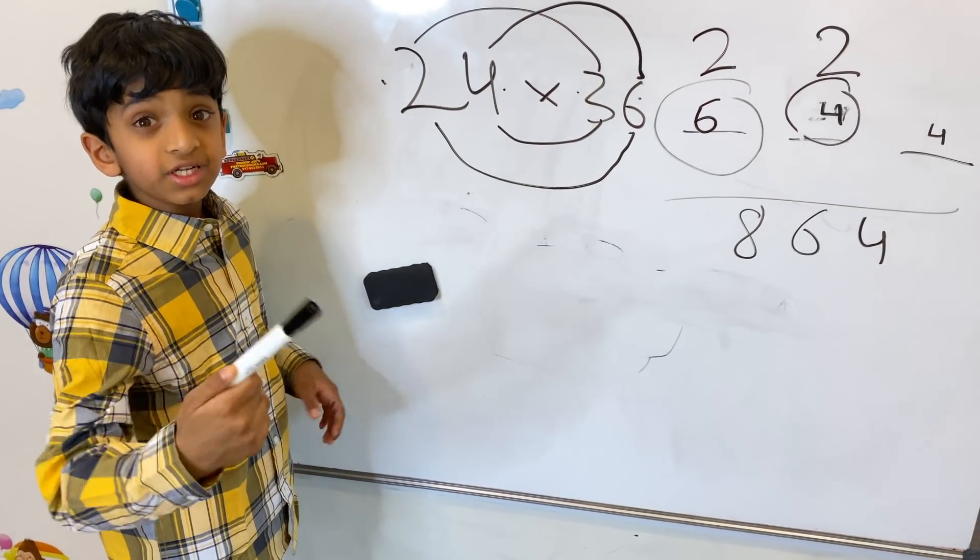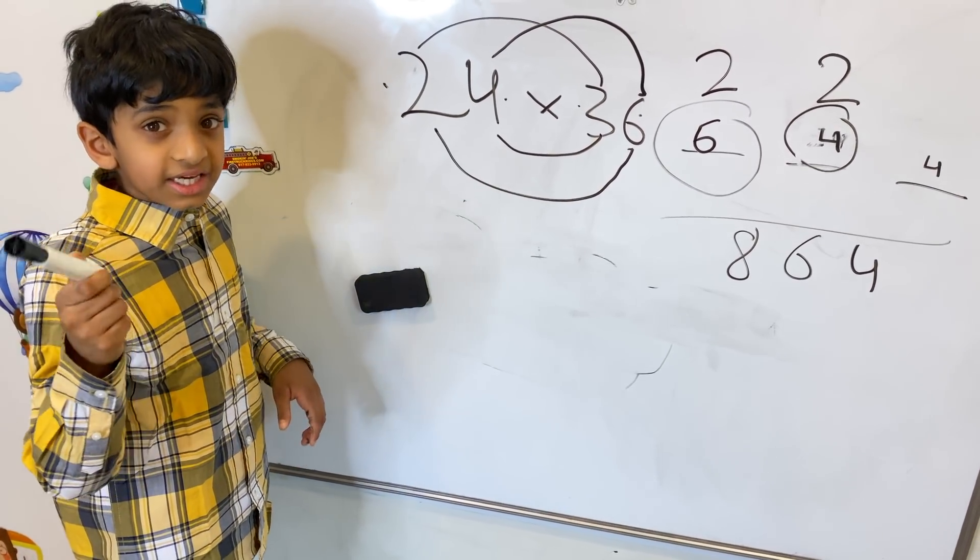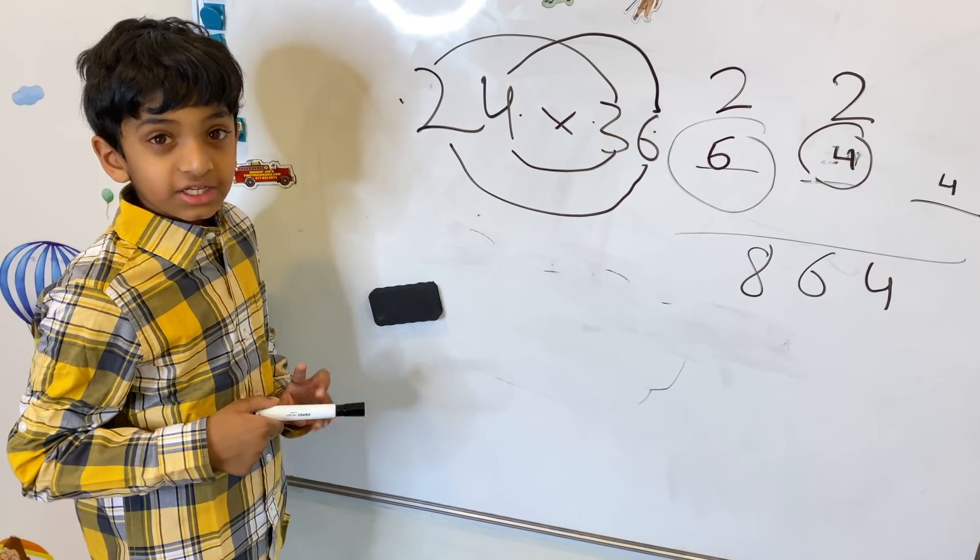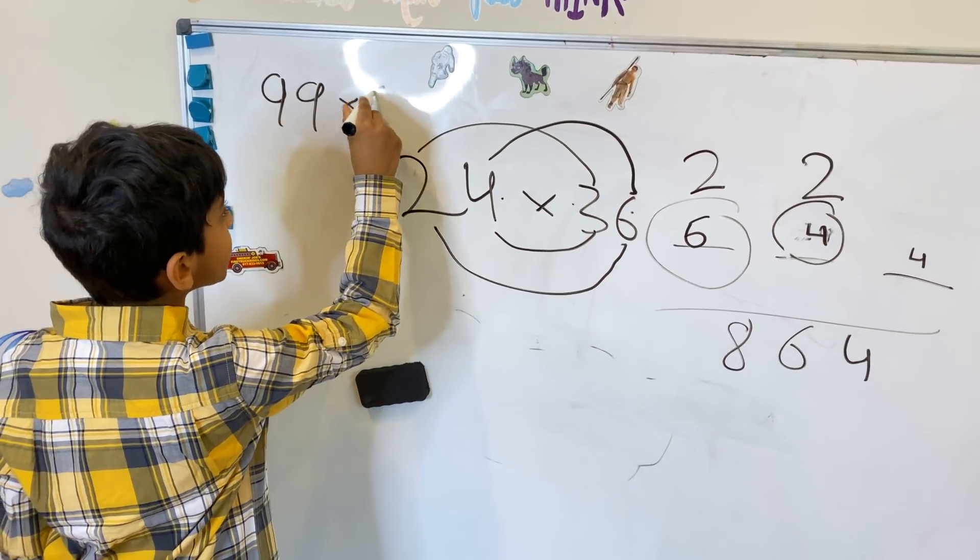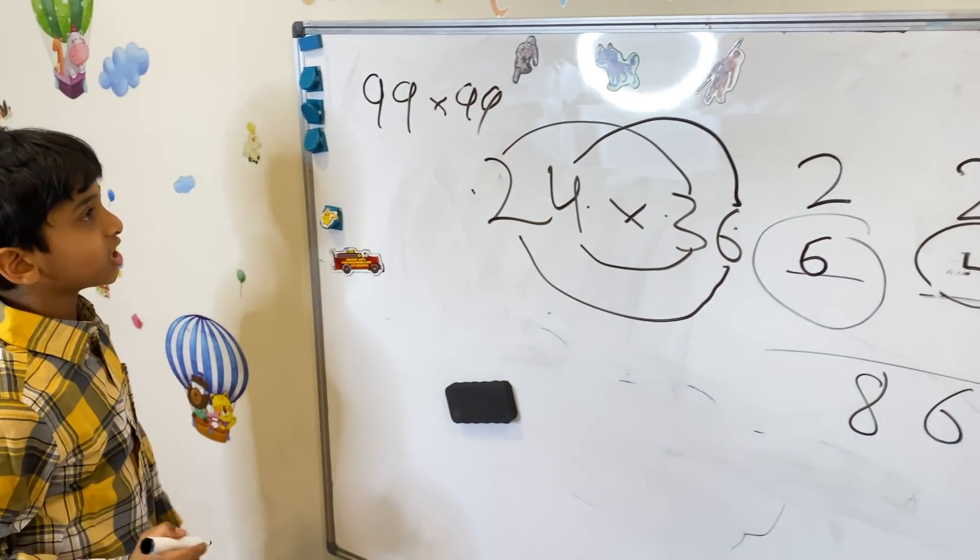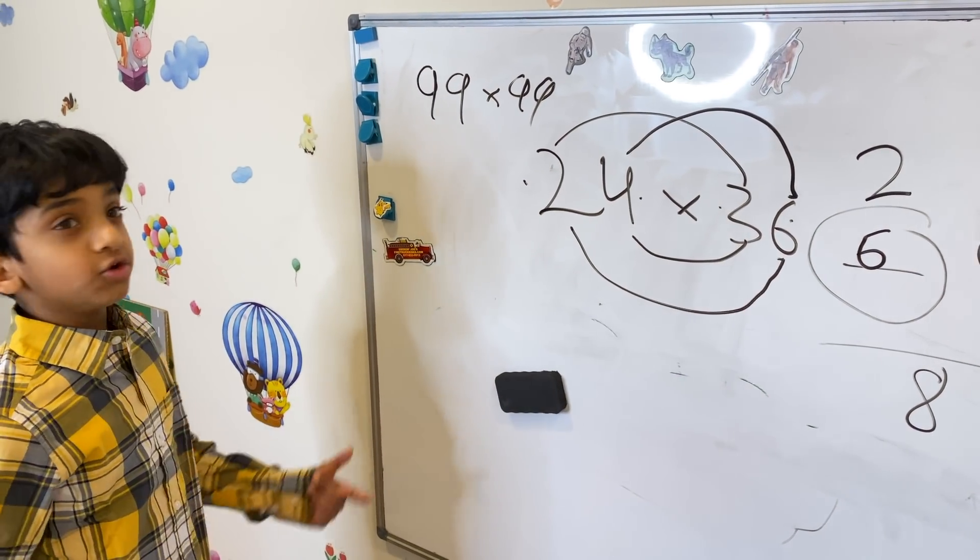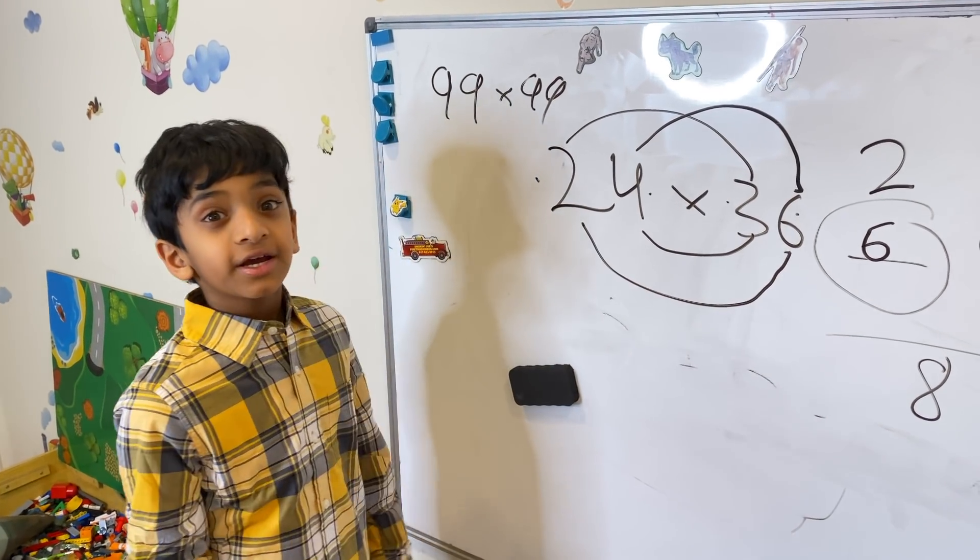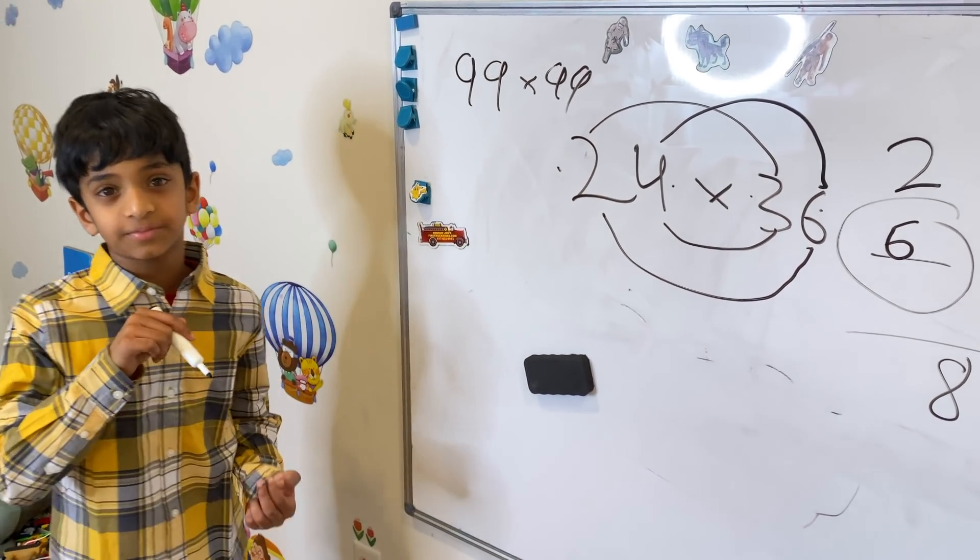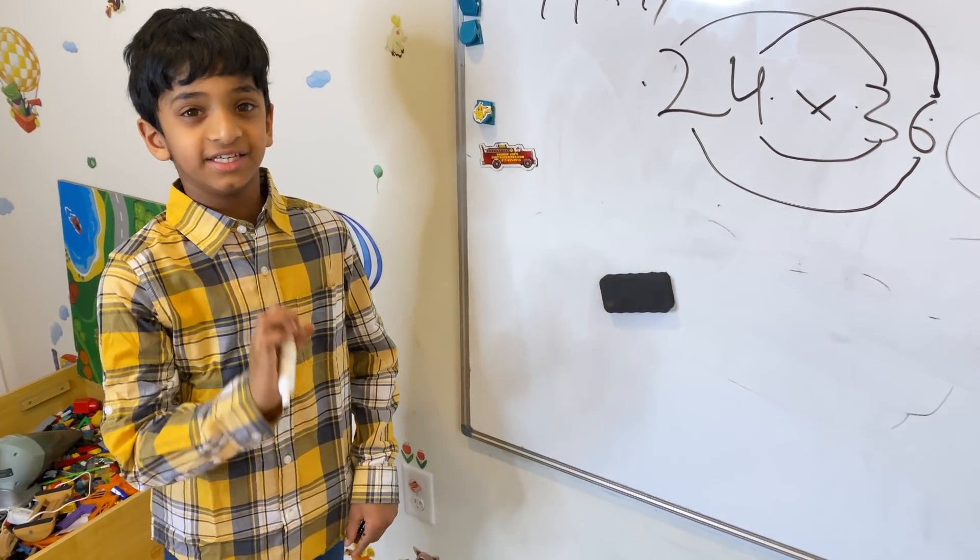This is a really easy trick, but you need to practice it so you can easily calculate in your brain. Like, let's say somebody gives you 99 times 99. You would be thinking for a very long time if you didn't know this trick. But since I taught you this trick, you can do any 2-digit multiplication super easy!